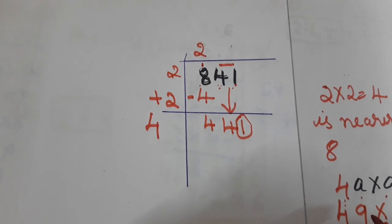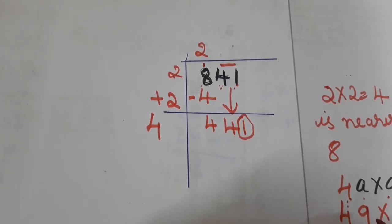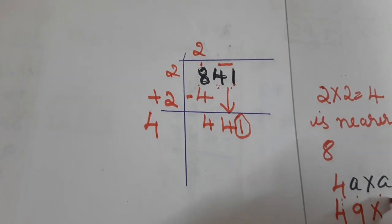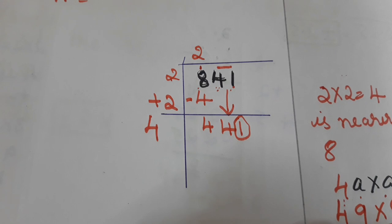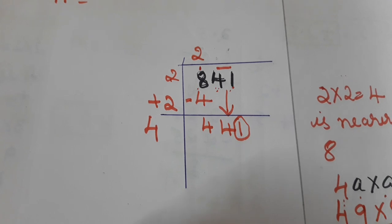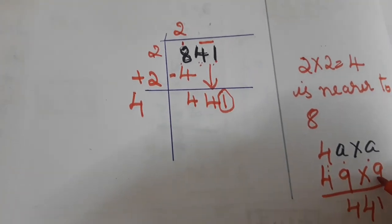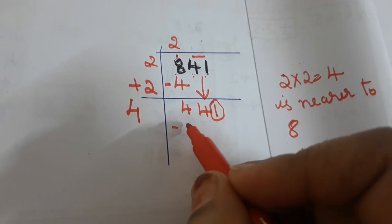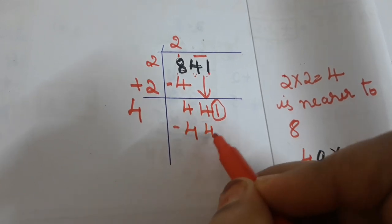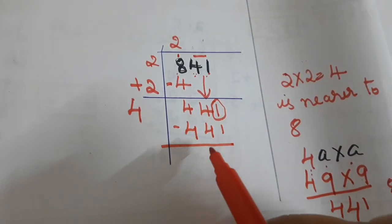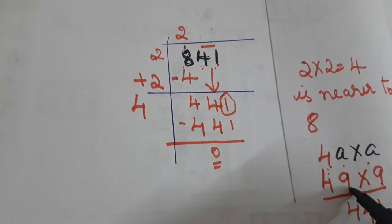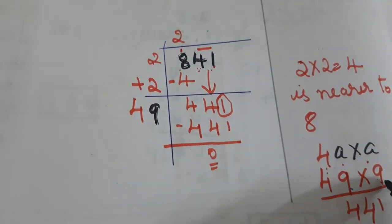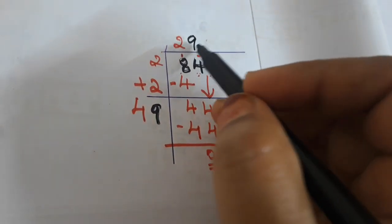So we try 49 × 9. Nine times nine is 81, carry 8. Nine times four is 36, plus 8 is 44. So 49 × 9 = 441 — same number. Write 441 here and put the minus symbol: 441 minus 441 is zero. The guessing number 9 we write in the top portion as well.